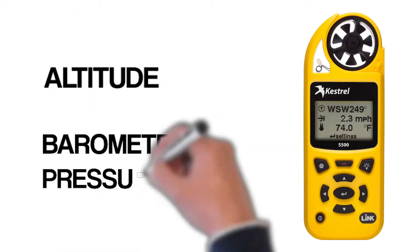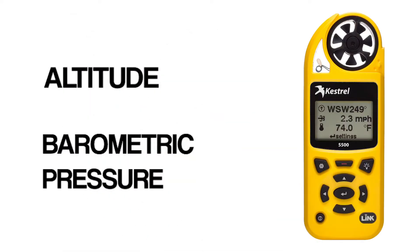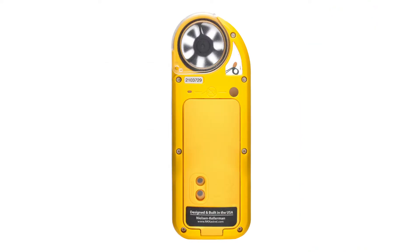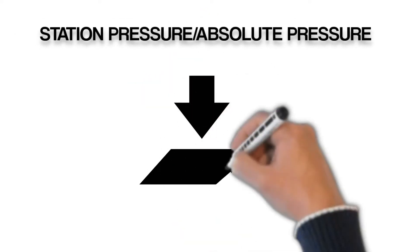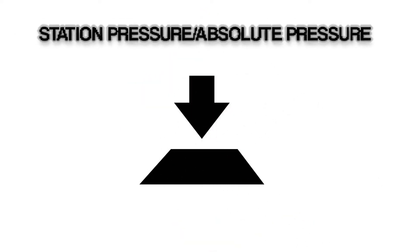The Kestrel requires you to enter reference values for these two measurements so that it can calculate the barometric pressure or altitude for your location using inputs from the Kestrel's pressure sensor. The Kestrel includes a pressure sensor that provides you with a station pressure measurement, also known as absolute pressure.